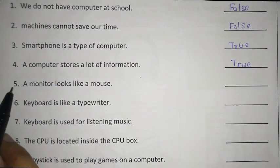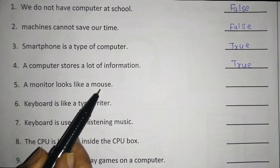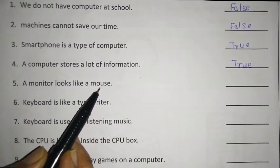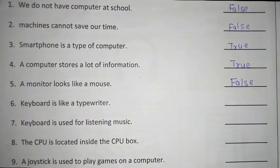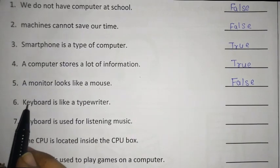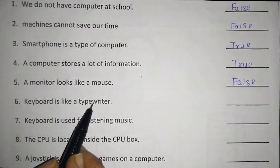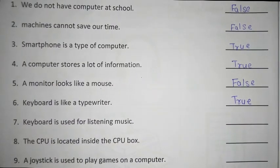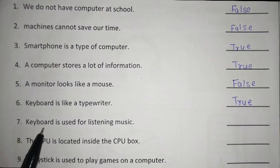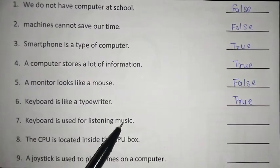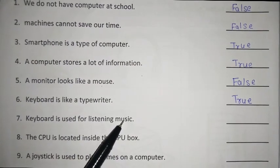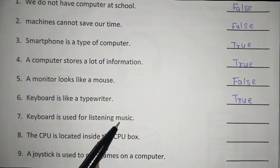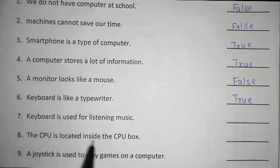Very good. Now fifth one: A monitor looks like a mouse — does a monitor look like a mouse? No, it looks like a television. So this one is false. Write false. Now, keyboard is like a typewriter — is it like a typewriter? Yes. So what you have to write here? True. Now seventh one: Keyboard is used for listening music — no, keyboard is used for typing. What is used for listening music? Speakers or headphones. So is it true or false? False. Write here: false.